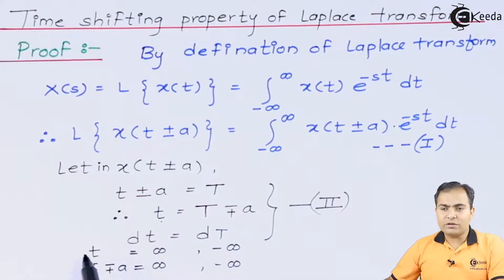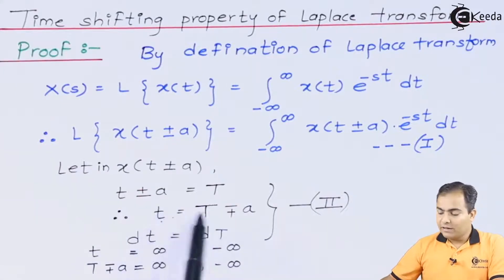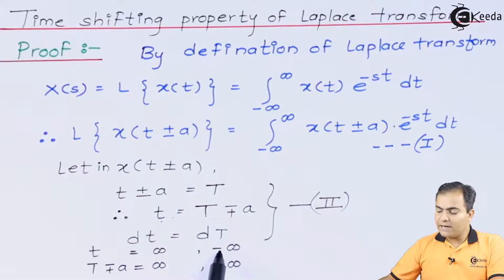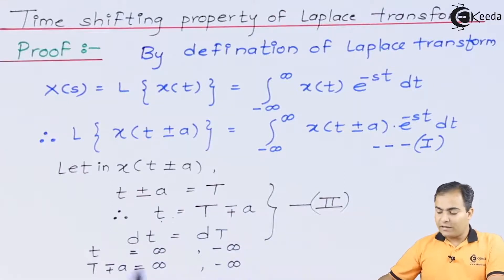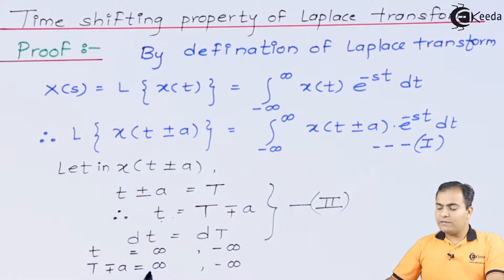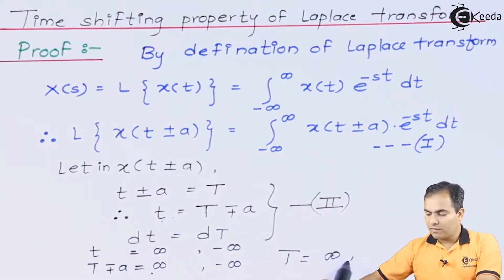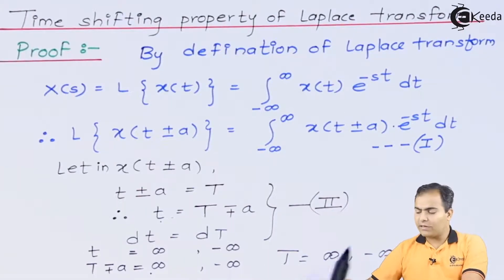Now we will substitute the limits of t. If I substitute infinity, then T = t ± a will also have an infinite result. Similarly, if we substitute minus infinity, then T will also have minus infinity. If we move the ± infinity to the right-hand side, the T value remains unchanged — the upper limit is infinity and lower limit is minus infinity.